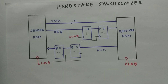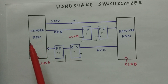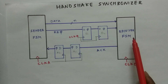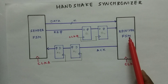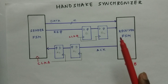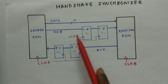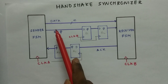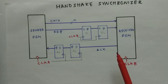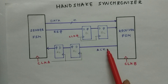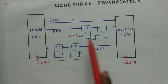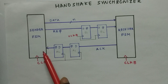From the sender state machine, we send data along with a request signal. After the data is correctly received, we get an acknowledgement back from the receiver to the sender. One important point is that the data should not change frequently — it must remain stable until we receive an acknowledgement signal from the receiver.